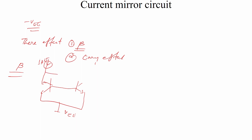Here we have the I-reference connected to the diode-connected transistor Q1, and I0 is the output. When I-reference passes through Q1, it generates a current IE. The collector current of Q1 is beta/(beta+1) times IE, and the base current of each transistor is IE/(beta+1).